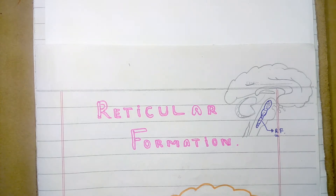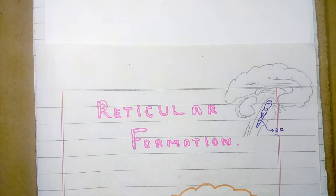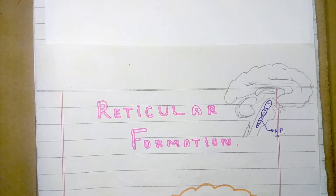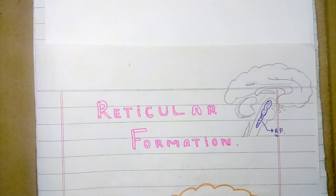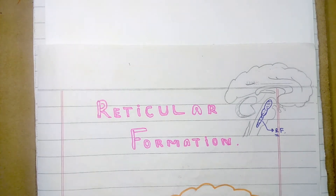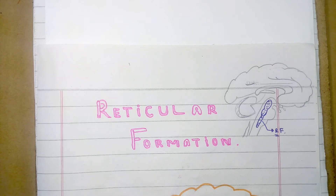I will explain how the reticular formation is associated with the control of the sensory and motor functions of the body, how it influences skeletal muscle activity, muscle tone and balance, how respiration is controlled by the reticular formation, along with the control of somatic and visceral sensations. Before moving toward the functions, we should know the structural features of the reticular formation.